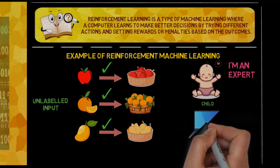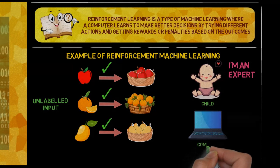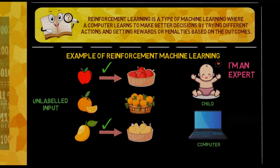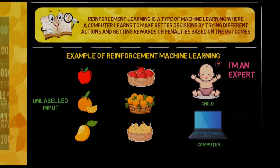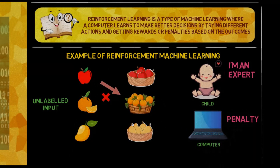Similarly, initially the machine doesn't know the difference between apples, oranges, and mangoes. It starts by randomly placing fruits into different baskets. Each time the machine places a fruit, it receives feedback in the form of rewards or penalties. For example, if it places an apple in the apple basket, it gets a reward. If it places an apple in the orange basket, it gets a penalty.